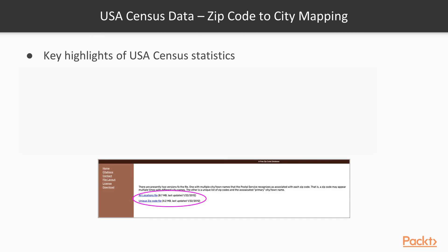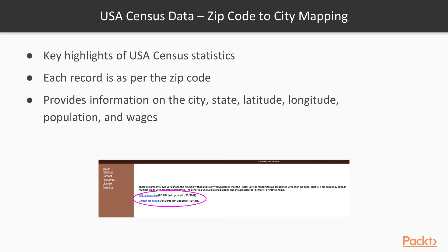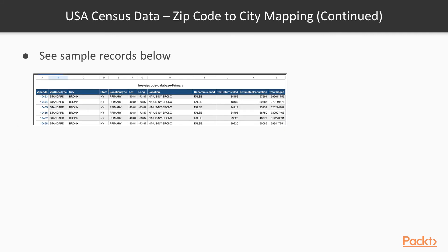Now let's look at the U.S. Census data. I'm getting this from the website shown below — it's called the Free Zip Code Database. Each record in that file is by zip code, and the columns include city, state, latitude, longitude, population for that zip code, and wages. The sample records are shown below.